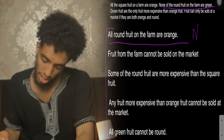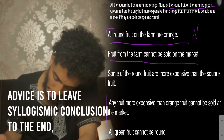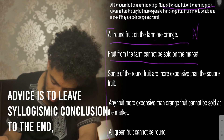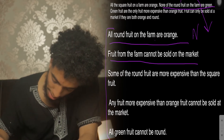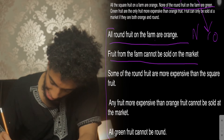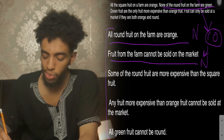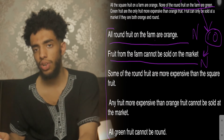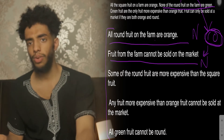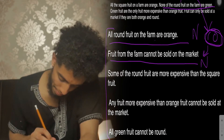Next: 'All fruit from the farm cannot be sold on the market.' Going back to the first sentence, fruit cannot be sold at the market if they're both orange and round. But fruit can be round and orange, so this is false — it's not true because the fruit can be round and orange.